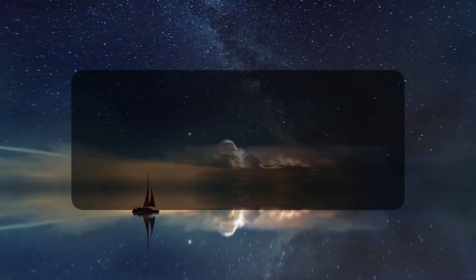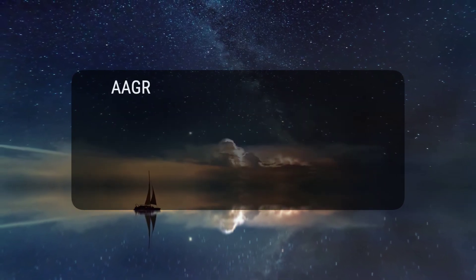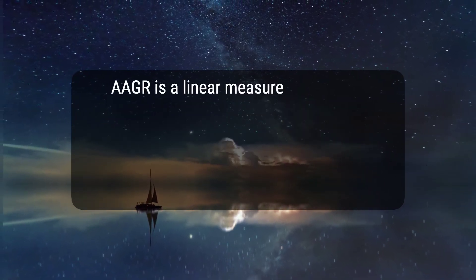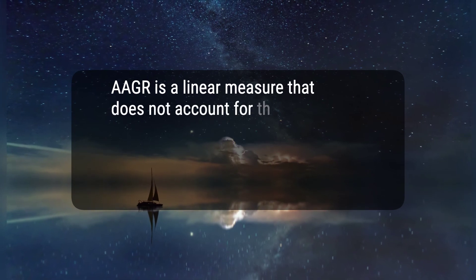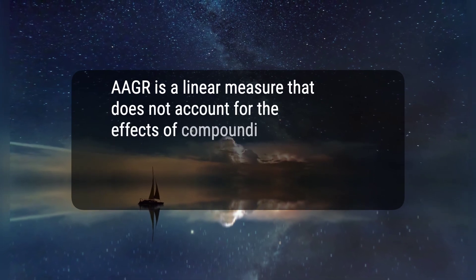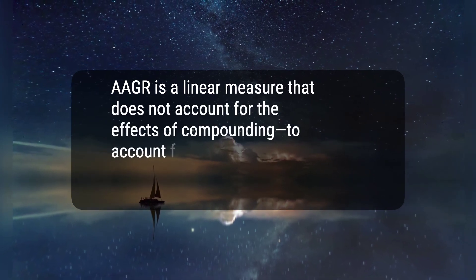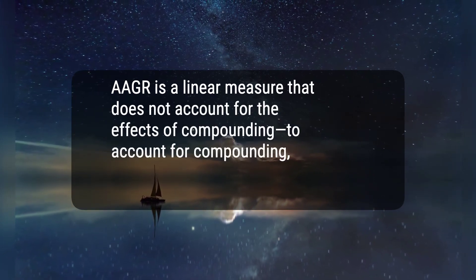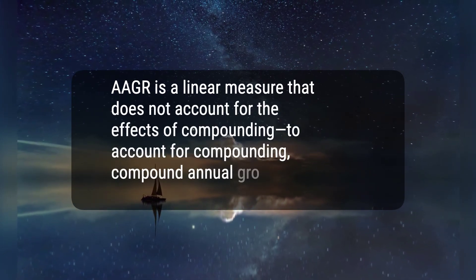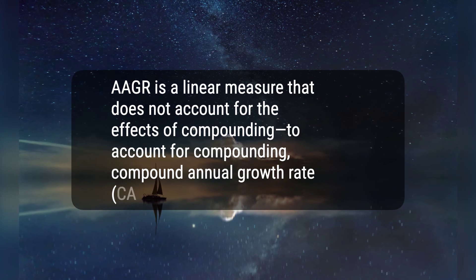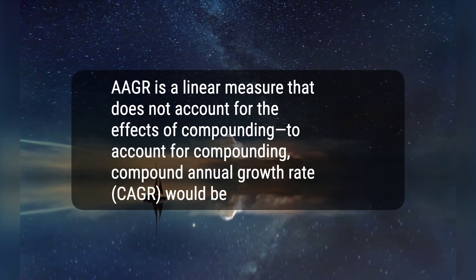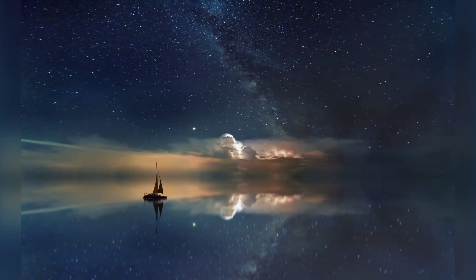3. AAGR is a linear measure that does not account for the effects of compounding. To account for compounding, compound annual growth rate, CAGR, would be used instead. Hope this would help, thanks for watching.